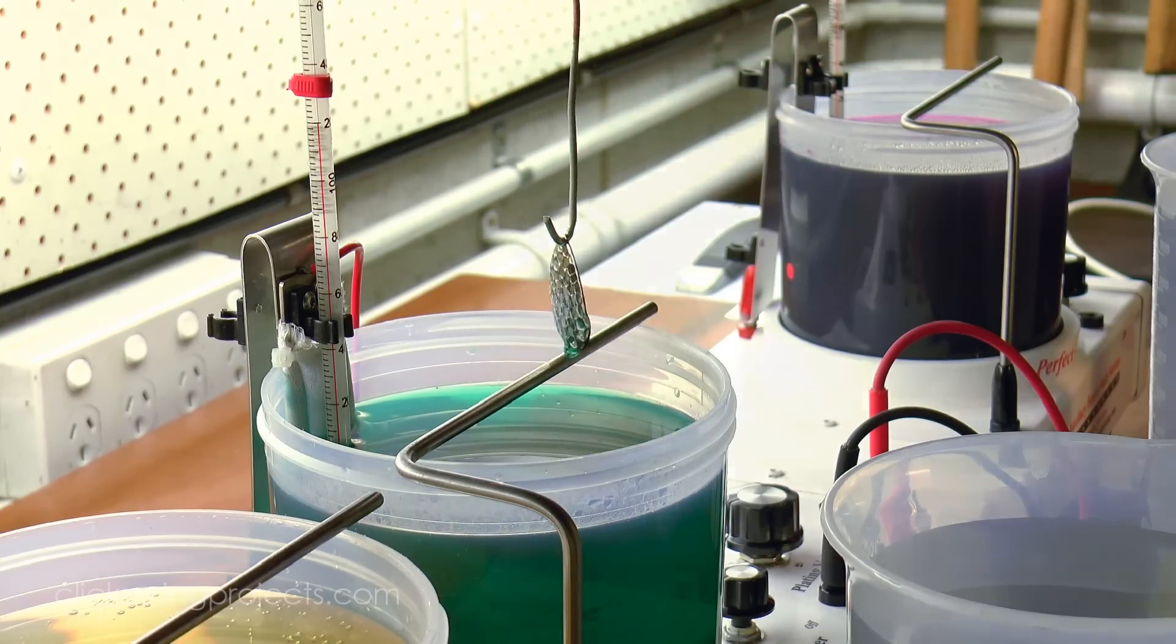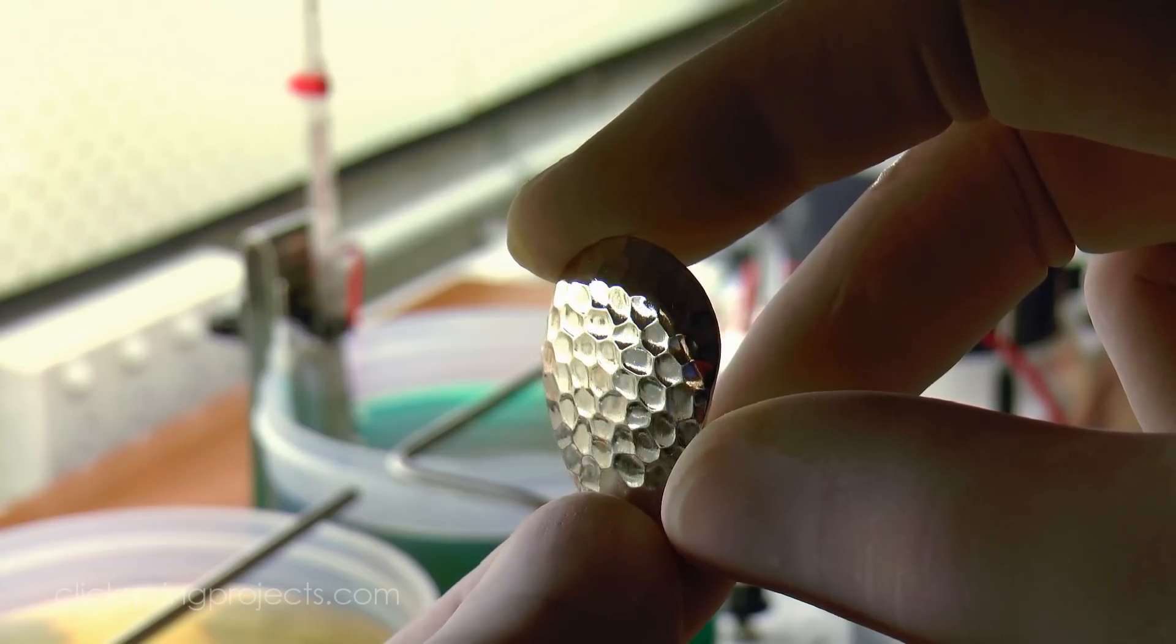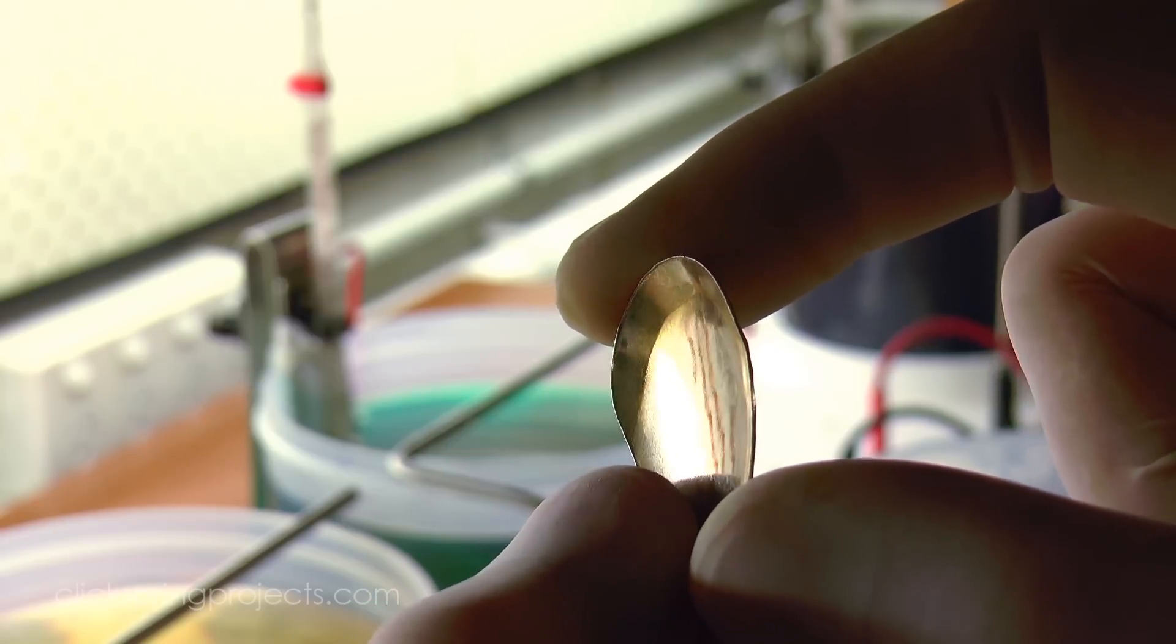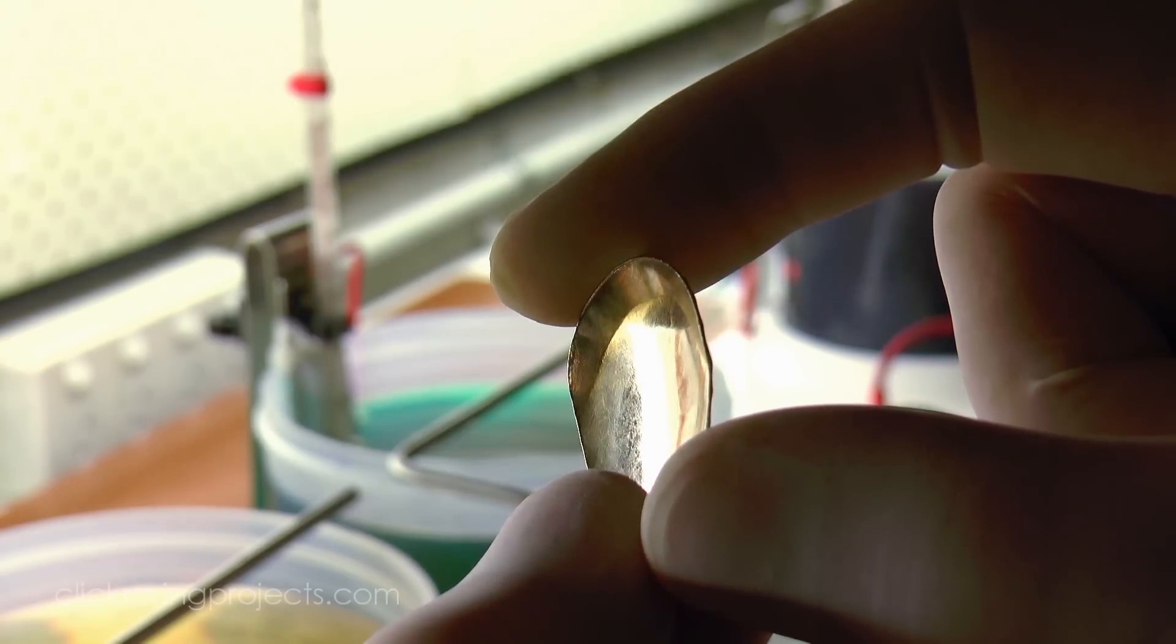This means that while the near side will pick up a good plate, the far side in a single anode setup like this slightly misses out, and deeper cavities in a part are often barely plated at all.